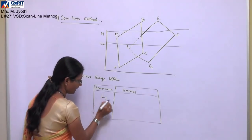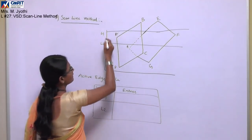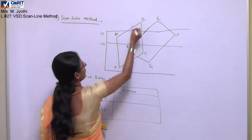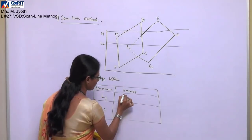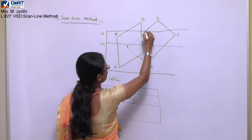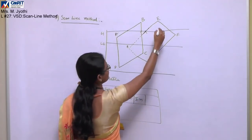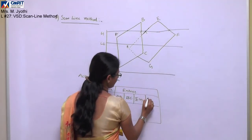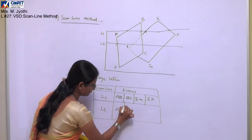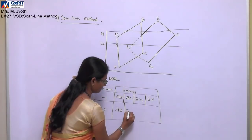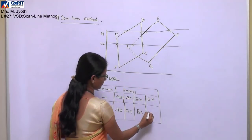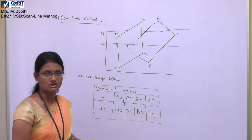For scan line L1, the intersecting edges in order are: AB, BC, EH, and EF. For scan line L2, the intersecting edges in order are: AB, EH, BC, and FG. This type of edge intersection information is stored in the active edge table.